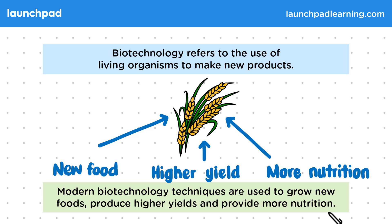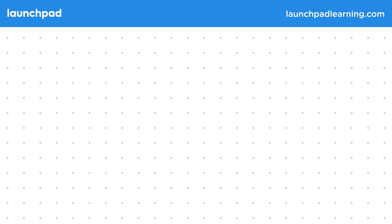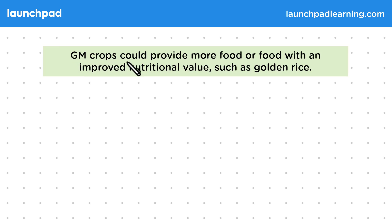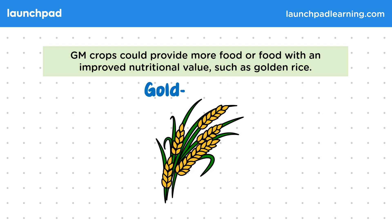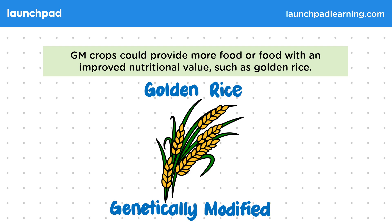GM crops could provide more food or food with an improved nutritional value, such as golden rice. The process of genetic modification is covered elsewhere in the course. Golden rice is a genetically modified crop that contains extra vitamin A to provide vital nutrients to people who eat it.